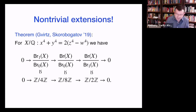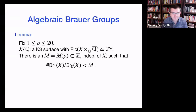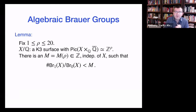Setting the extension problem aside for a moment, let's look at the algebraic Brauer group and the transcendental Brauer group separately. I want to show you that the algebraic Brauer groups of K3 surfaces are uniformly bounded. If I fix the Picard rank of the surfaces, there's some constant depending only on the rank such that the algebraic Brauer group is bounded by this constant. Since the Picard rank can only go between 1 and 20, there are at most 20 constants to worry about.